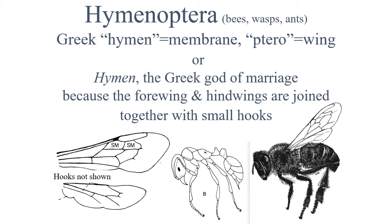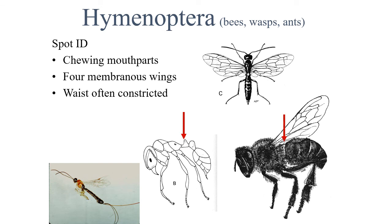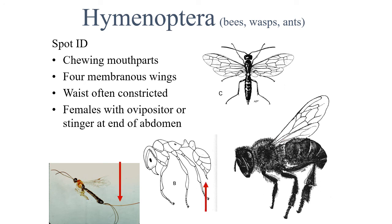The Hymenoptera include bees, wasps, ants and sawflies. Their name comes from the Greek god of marriage because the forewing and hind wings are joined together with small hooks. The Hymenoptera have chewing mouth parts, four membranous wings, and their waist is often constricted, meaning that their food has to be either liquid or very well ground up. Females have an ovipositor or stinger at the end of the abdomen.